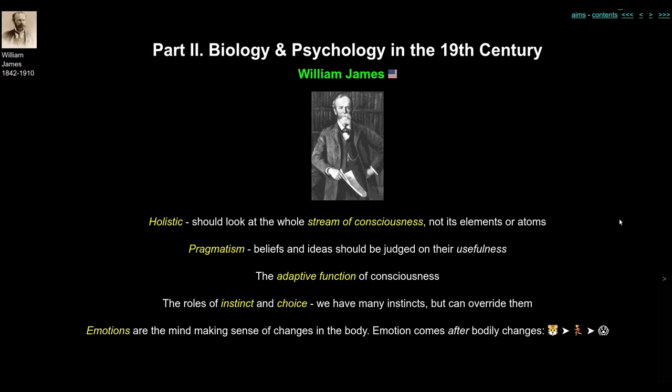One major contribution James made to biological psychology was the idea that emotions are the mind making sense of physiological changes in the body — and that emotion actually comes after bodily changes. The classic example: we see a tiger, we start running, and only later do we feel fear and horror. Another scientist, Lange, had the same idea, so it is often called the James-Lange theory of emotion. The alternative view — that emotion comes first and the body reacts later — is the Cannon-Bard theory.